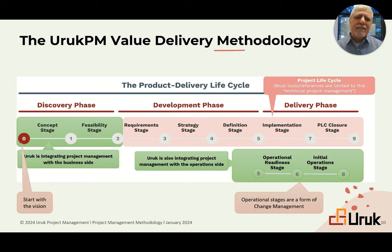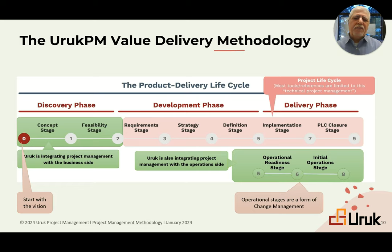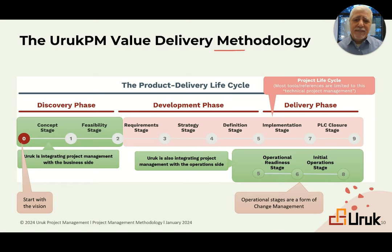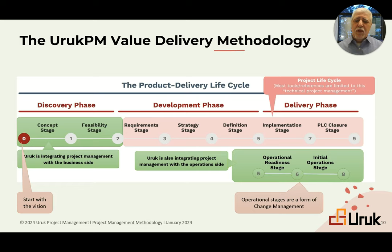Each sector is broken down into domains. Under capital projects, domains could include oil and gas or renewable energy. Within those domains, there are categories — for example, in oil and gas: offshore, onshore, new facility, revamp, brownfield, greenfield. In technology, domains could be software, hardware, or transformation. Ideally, in two to five years we could have hundreds of tailored methods built into the platform. Currently we have about 40 to 50.